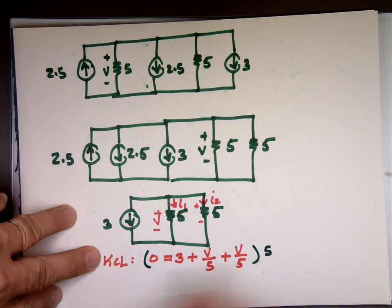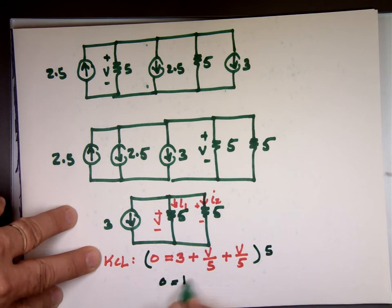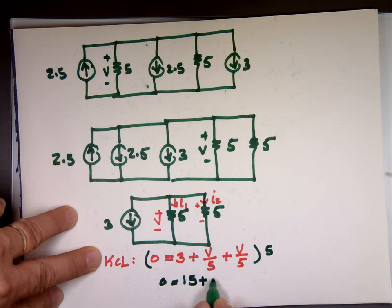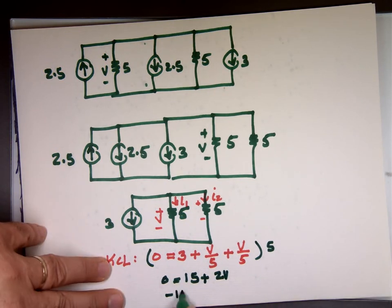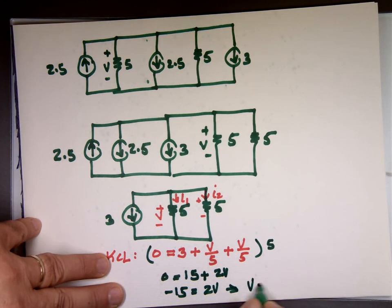My LCD is 5. So if you multiply by 5 since we don't like fractions. 0 equals 15 plus, final answer 2V. Negative 15 equals 2V. V equals negative 7.5 volts.